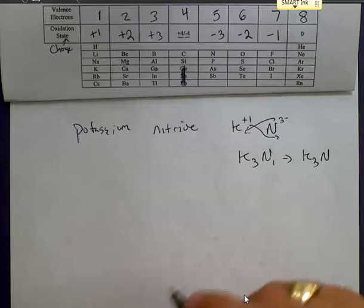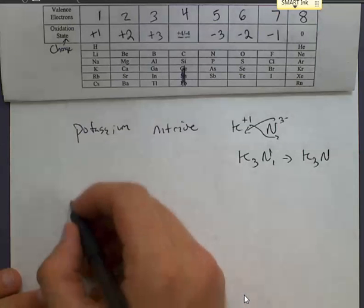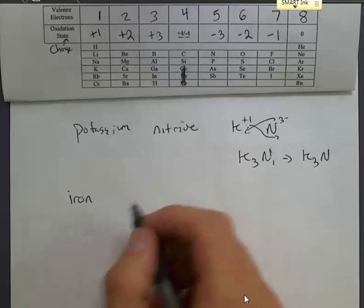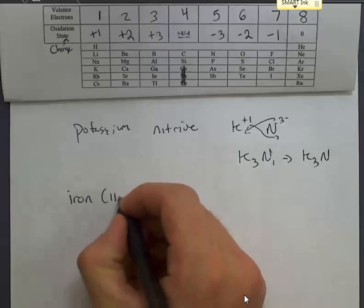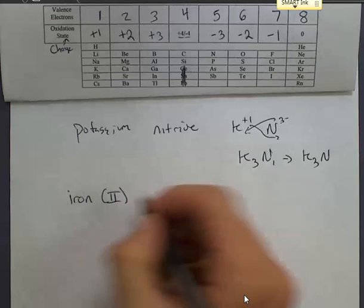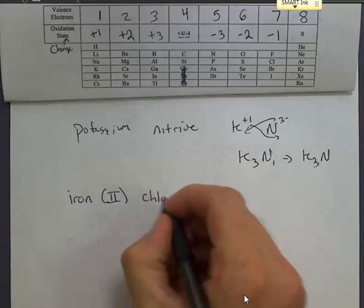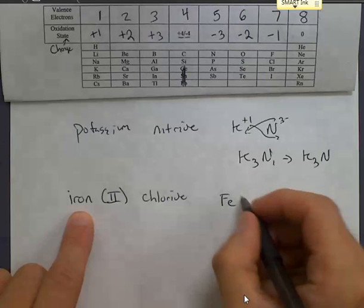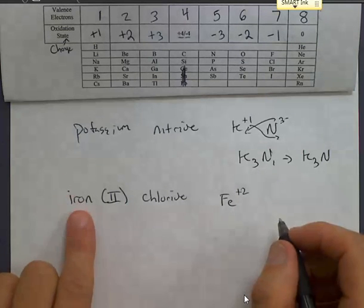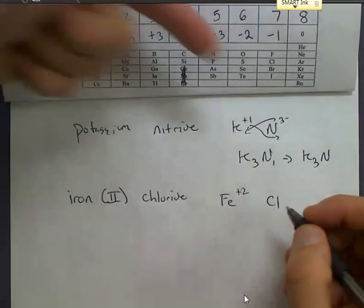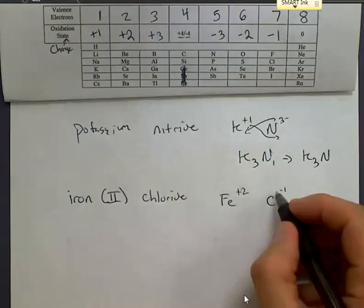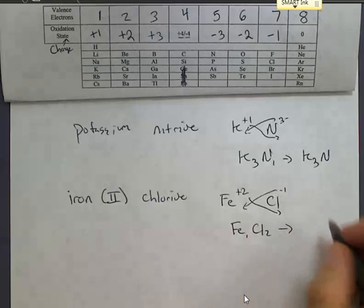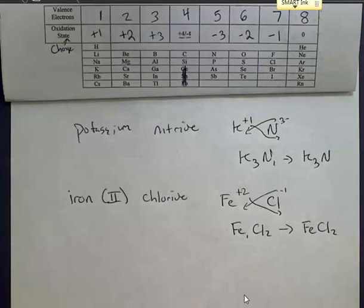Let's see how it works with a transition metal. Let's recall that to write a formula, or write a name for a transition metal compound, you need a Roman numeral. So let's look at how we would do iron(II) chloride. It's telling us that iron has a +2 charge. That's what the Roman numeral means - it means the charge on the metal. We know that chlorine is going to be a -1. So let's criss-cross. We see Fe1Cl2, and that cleans up to just look like FeCl2.